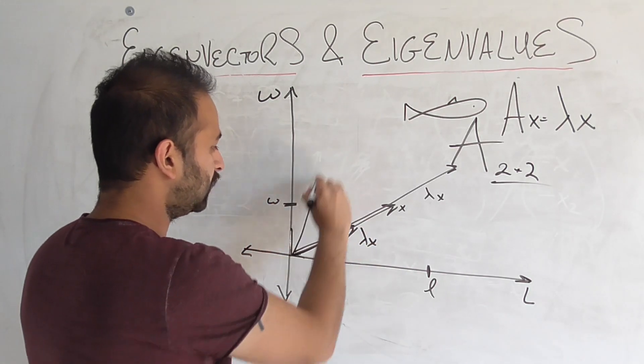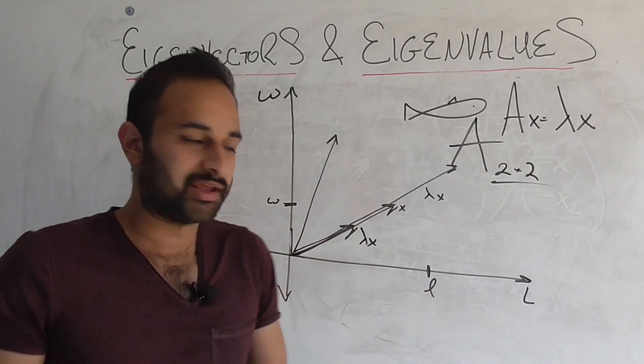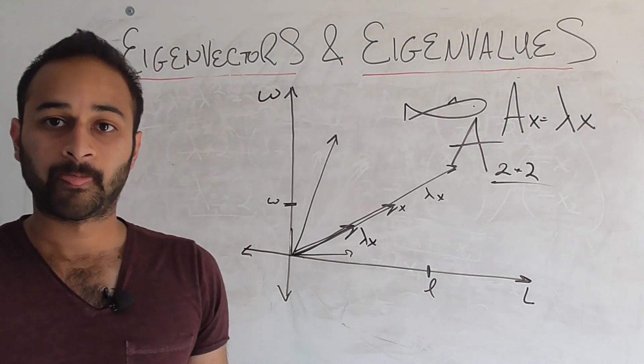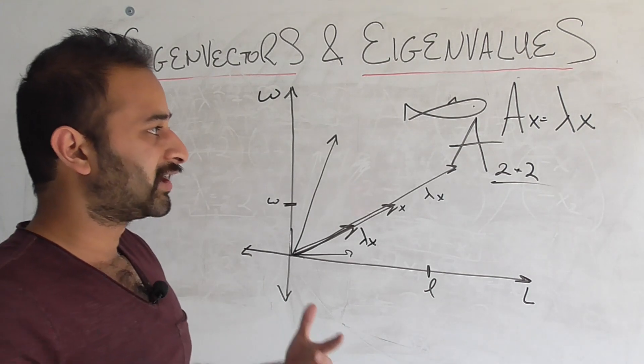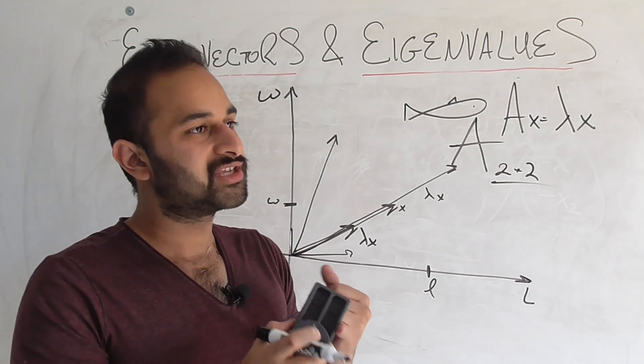That can't be said for any other vector in this plane. If I have this vector, the ratio of length and weight are completely different. If I have this vector, they're again completely different. So the power of eigenvalues and eigenvectors in a data science context is that if you know something is an eigenvector,